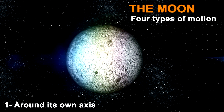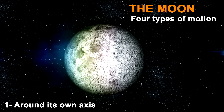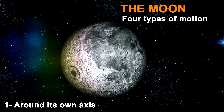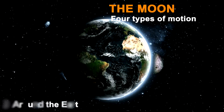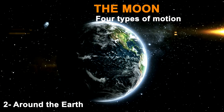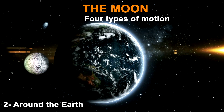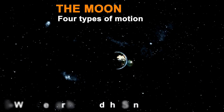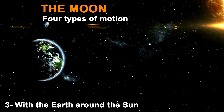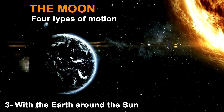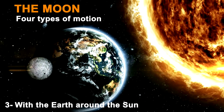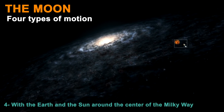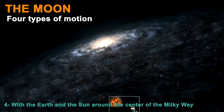The moon's rotation is more complex, since it rotates around its own axis, around the Earth, with the Earth around the Sun, and with the Earth and the Sun around the center of the Milky Way galaxy.